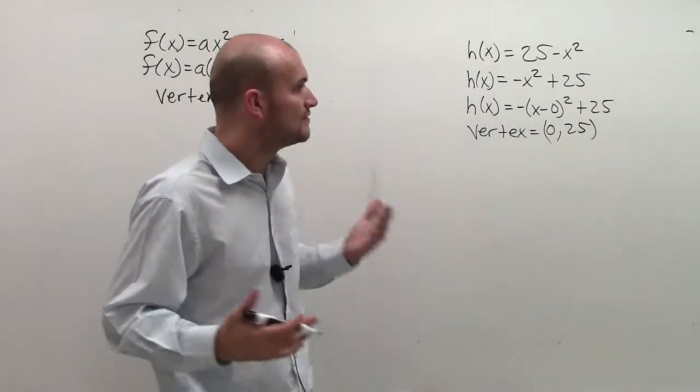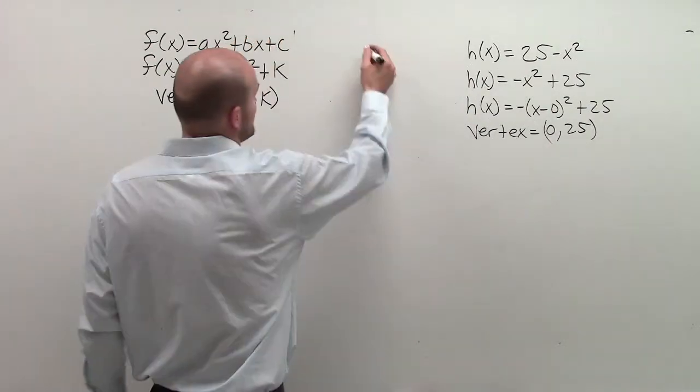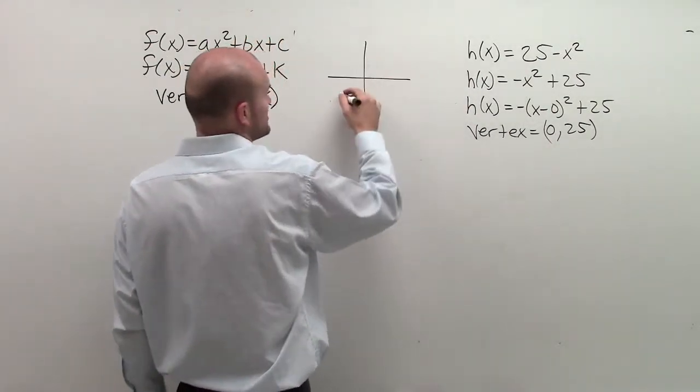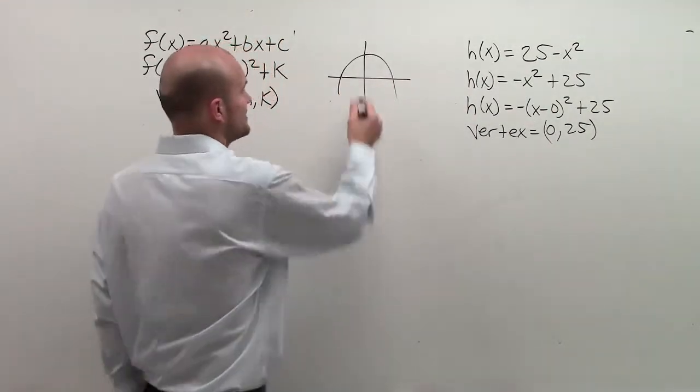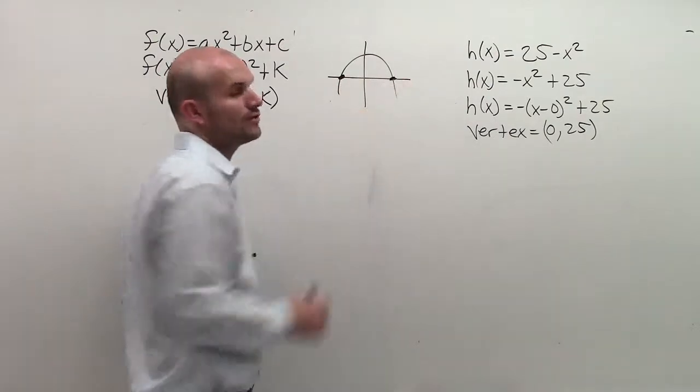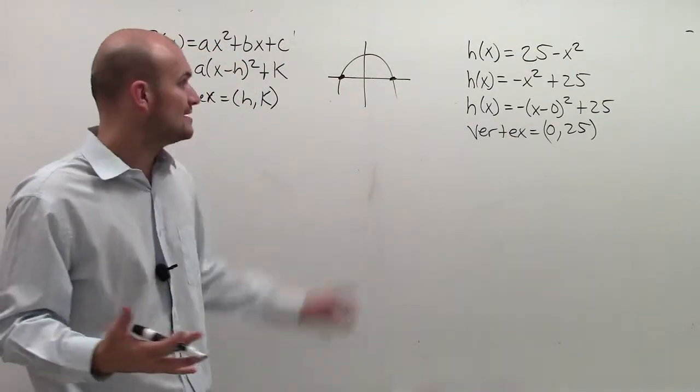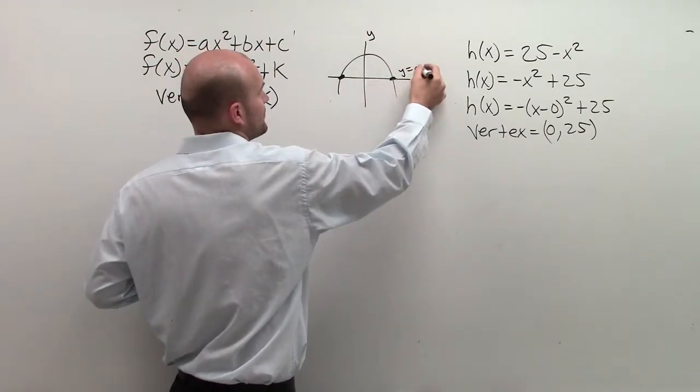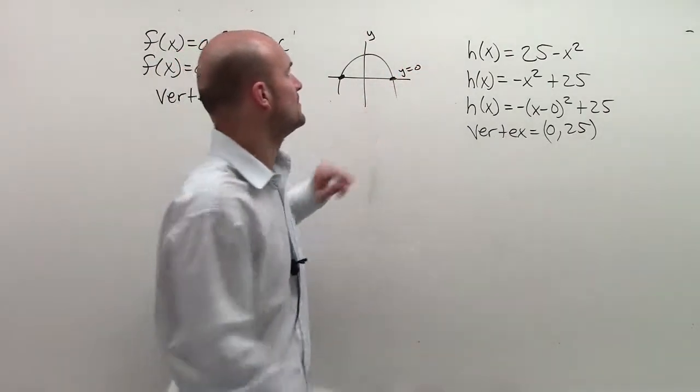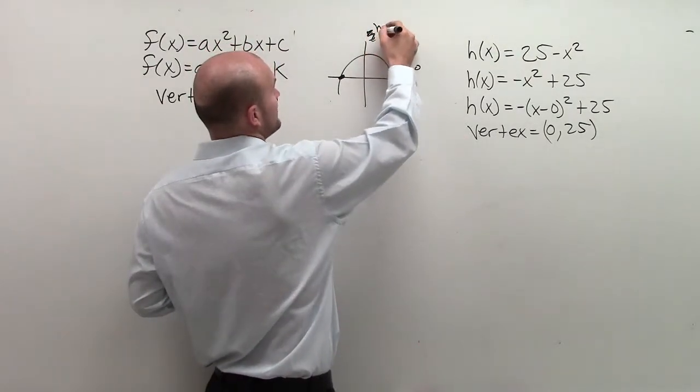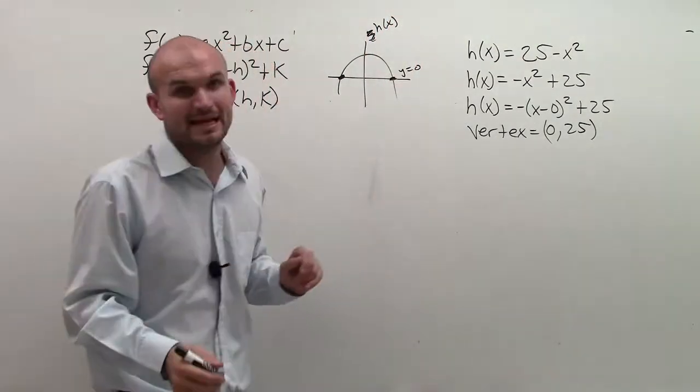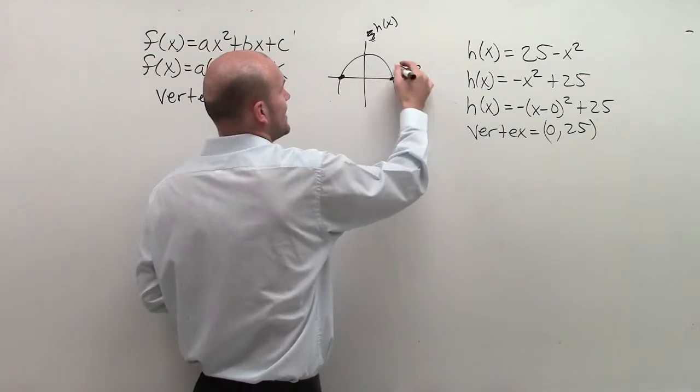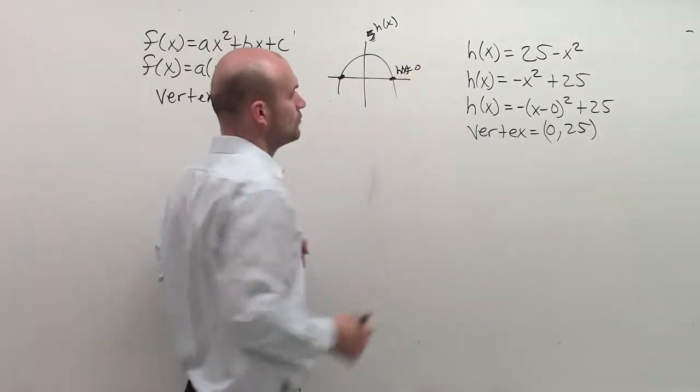Then the next thing we need to do is we need to find the rest of the x-intercepts. So one thing I just want to make sure you guys understand is if I was going to graph this, remember the point where my graph crosses the x-axis, my value of y is equal to 0. So what I'm going to do, and remember, this could also, actually, for this graph, it's going to be h(x), right? So h(x) equals 0.